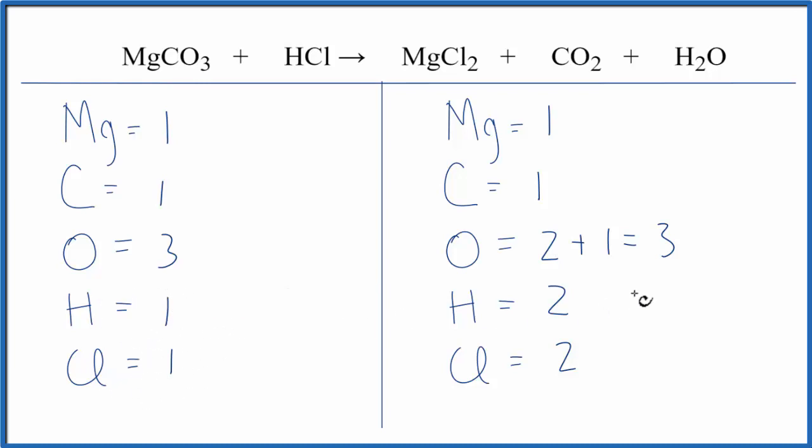So we have two of these to balance these two. That's actually pretty easy. We could put a 2 in front of the HCl, 1 times 2, that would give us 2. And then chlorines, 1 times 2, that would give us 2, and I take it back. This actually was pretty easy to balance.